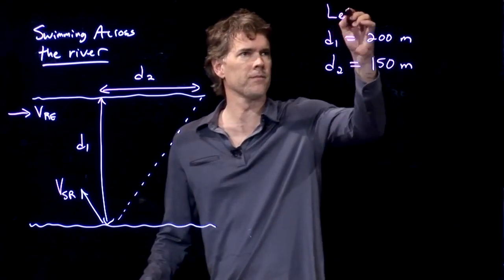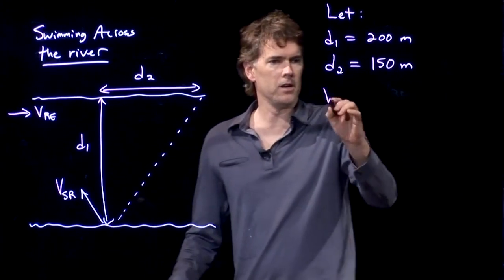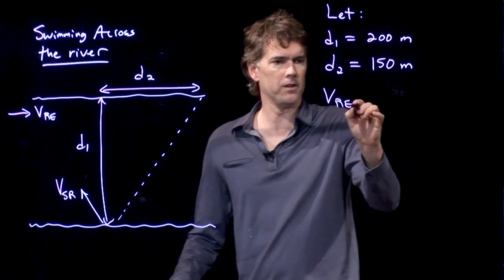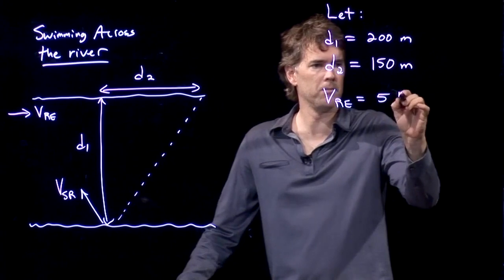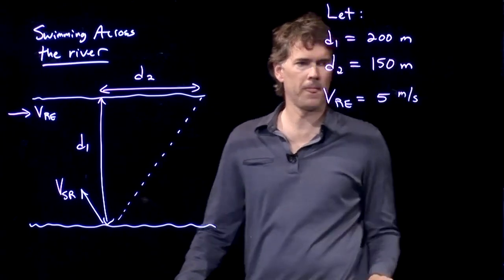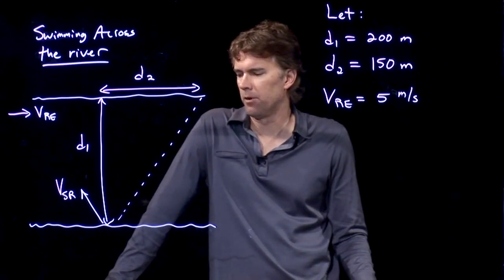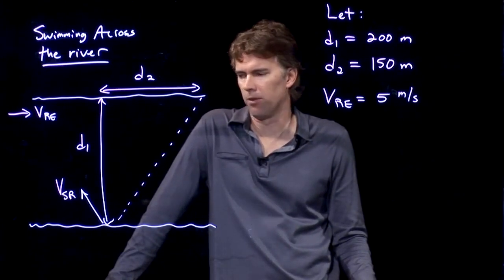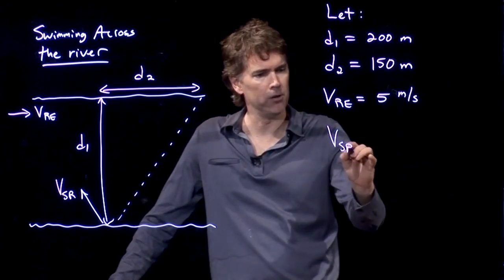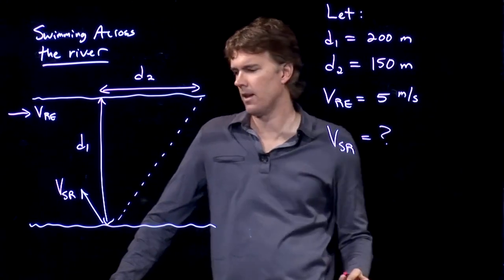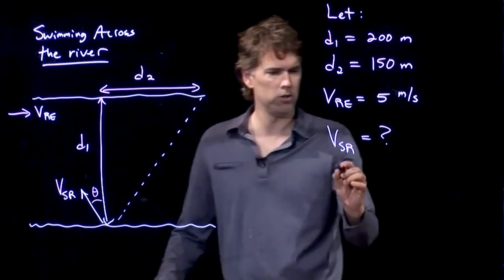and let's say that the velocity of the river relative to the earth is 5 meters per second. And now let's see if we can figure out a couple things. We need to figure out how fast you need to swim, and at what angle theta you should point yourself.